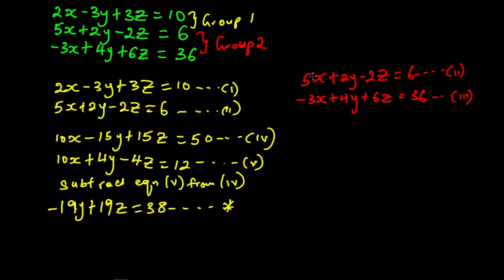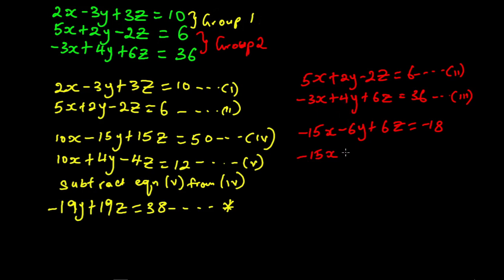To equate the coefficient of x, we multiply equation 2 by minus 3 and equation 3 by 5. Multiplying equation 2 by minus 3: 5 times minus 3 gives minus 15x, 2 times minus 3 gives minus 6y, and minus 2 times minus 3 gives plus 6z, and 6 times minus 3 gives minus 18. Multiplying equation 3 by 5: minus 3 times 5 gives minus 15x, 4 times 5 gives 20y, 6 times 5 gives 30z, and 36 times 5 gives 180.